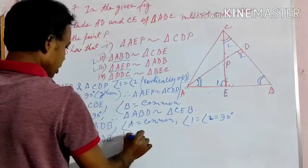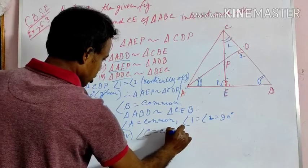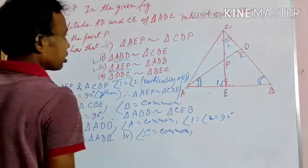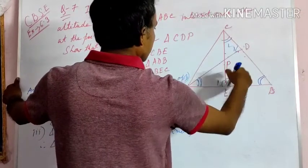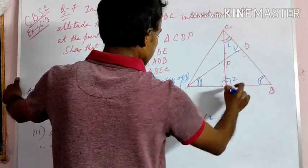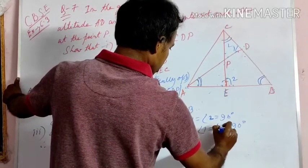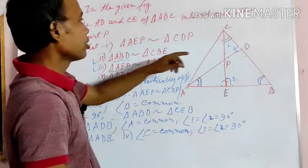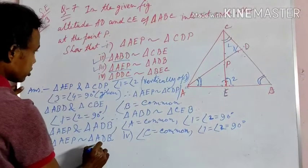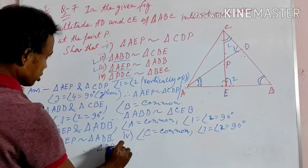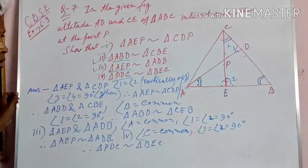Angle C is a common angle for both triangles. Also, angle PDC (angle 1) and angle BEC (angle 2) are both equal to 90 degrees. Since two angles of both triangles are equal — angle C is common and the other pair are each 90 degrees — therefore triangle PDC is similar to triangle BEC. This is a very important question.